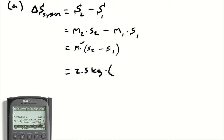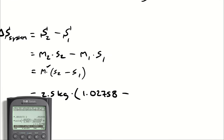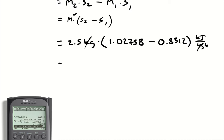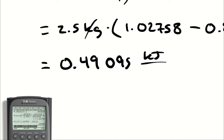Now I have two and a half kilograms multiplied by (s2 minus s1): 2.5 × (1.02758 minus 0.8312) kJ/(kg·K). Kilograms cancel, leaving a quantity in kJ/K. The entropy change of the system is 0.49095 kJ/K.